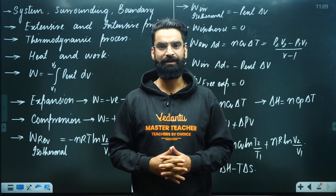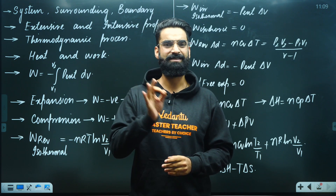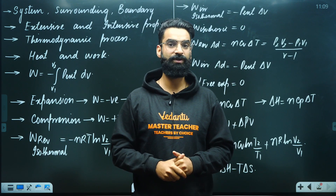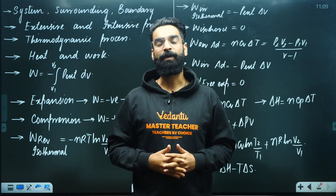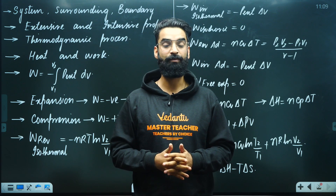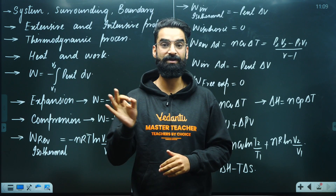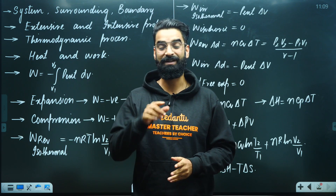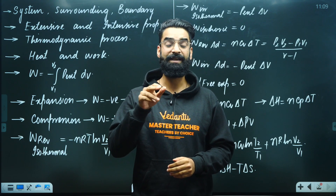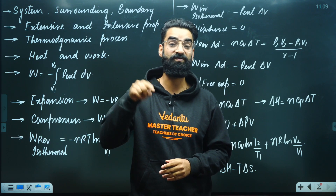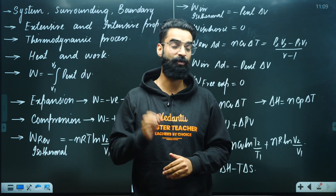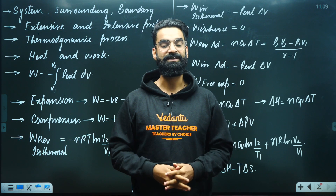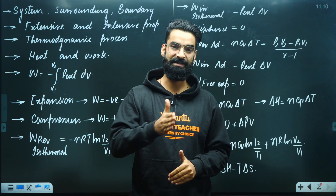Talking about enthalpy. Enthalpy is an extensive property and a state function. The change in enthalpy for a cyclic process is also zero. For an ideal gas, enthalpy depends only on temperature. To calculate ΔH for an ideal gas: ΔH = nCpΔT (if Cp is temperature independent). The general relation between ΔH and ΔU: ΔH = ΔU + Δ(PV). If pressure is constant: ΔH = ΔU + PΔV. If volume is constant: ΔH = ΔU + VΔP. For a gaseous phase reaction at constant temperature: ΔH = ΔU + Δn_g RT, where Δn_g = moles of gaseous products minus moles of gaseous reactants.